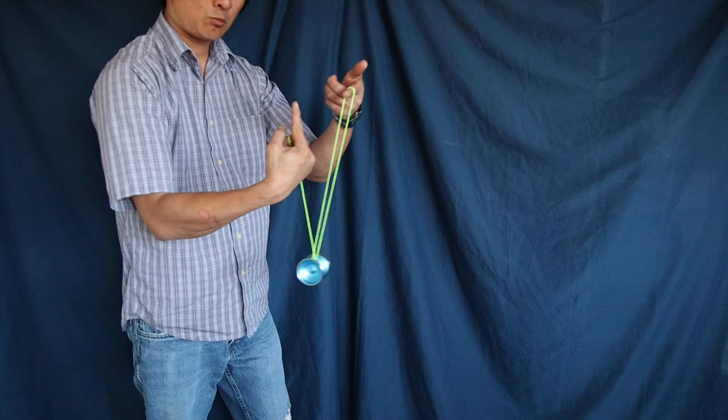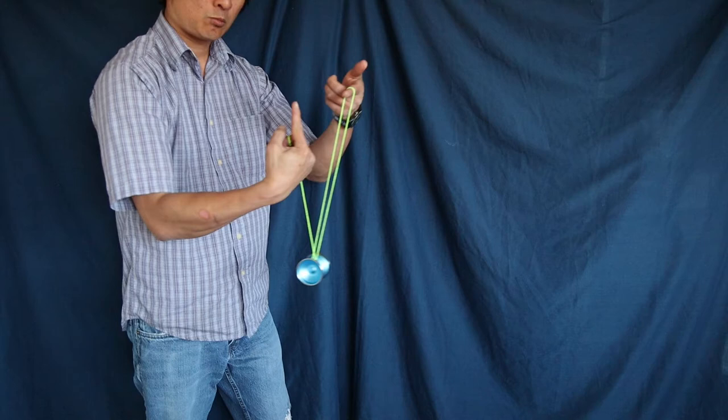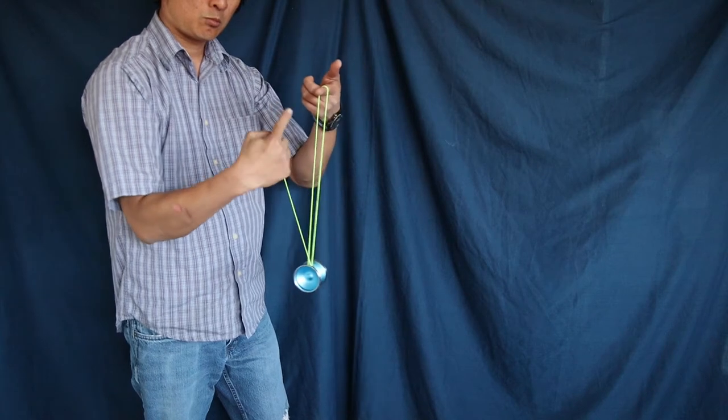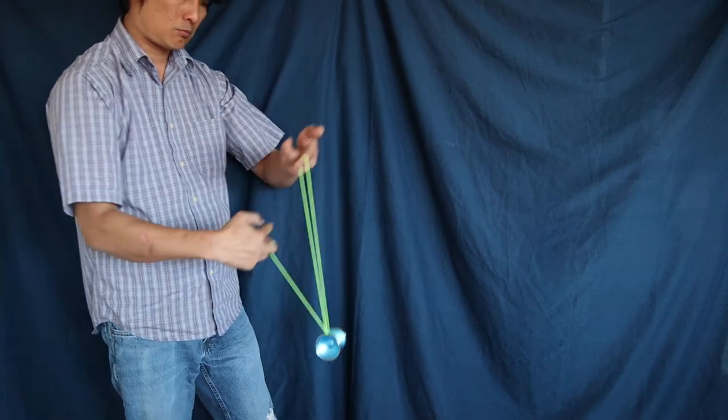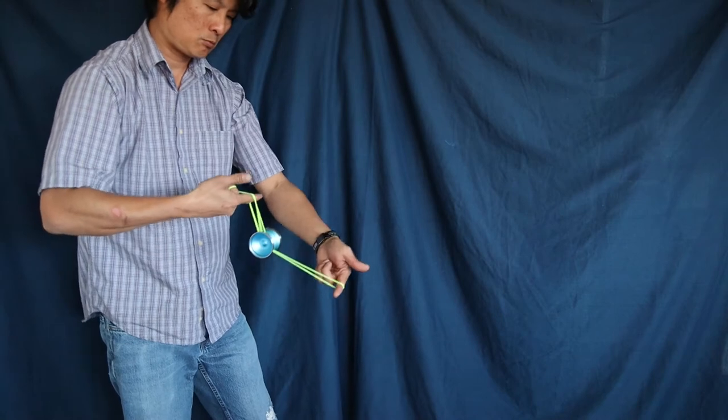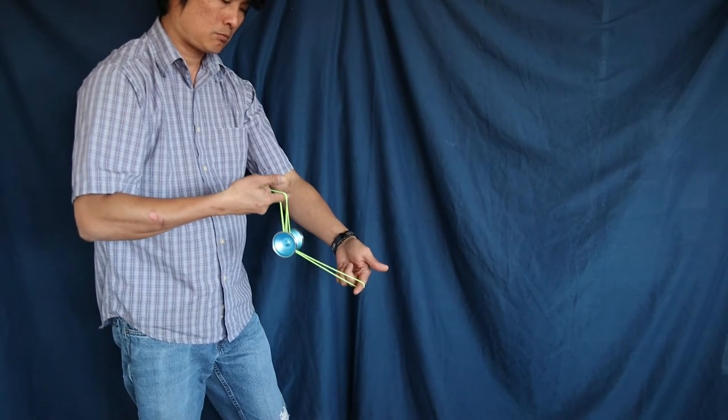And then what you'll do is you'll take your index finger from your throw hand, and instead of doing another cycle of the brain twister, you're going to put that index finger to stop that motion so that the brain twister will actually land on the multiple strings that are coming off from your other finger, like so.